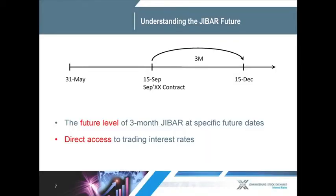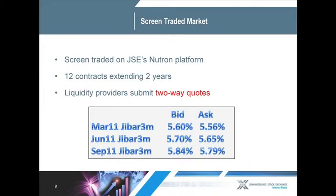Now we understand what the JIBAR rate is. The future is effectively just the future value of that benchmark rate at a certain point in time. Looking at the timeline shown on the picture, if we sit on the 31st of May and we look forward over time, we'll see that we can transact the September contract, which is the 15th of September, effectively taking a view on the three-month rate at the 15th of September. This gives us direct access to the interest rate market in South Africa. Unlike most of the over-the-counter markets — the markets that the big banks and corporates play in — this market is transacted on a screen, on the JSE's Neutron platform. We have 12 contracts extending up to two years out, and we have liquidity providers who are some of the banks providing two-way market prices for all 12 contracts, so you can take positions on any of them.